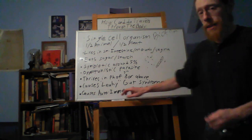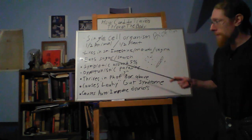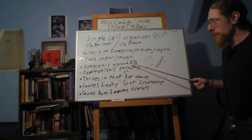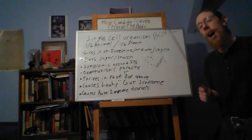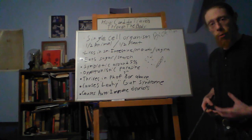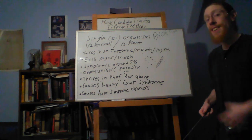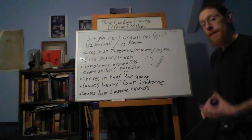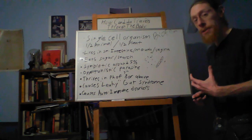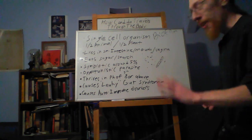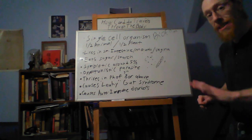We discussed in the last video how Candida is a single-cell, half-animal, half-plant microorganism that is symbiotic with the human body at about 5% of the body's roughly 100 trillion microorganisms. You have 10% human cells, 90% bacteria and fungus. Every animal is a walking fungal-bacterial ecosystem, and we've got to keep this in mind while we're trying to balance our systems.